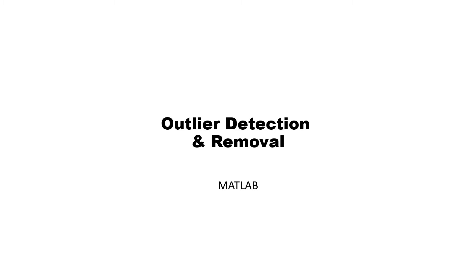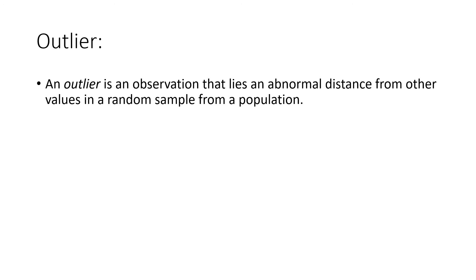An outlier is an observation that lies an abnormal distance from the other values in a random sample from a population. For example: 55, 88, 90, 93, 94. Here 55 is abnormally distant from the rest of the values, so it clearly indicates that there is a possibility that 55 is an outlier. We need to take care of these things before training our machine learning model.